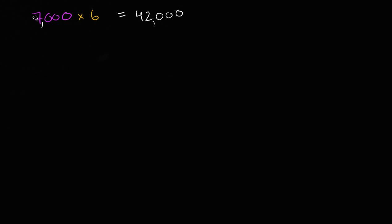So 7,000 is the same thing as 1,000 times 7, or 7 times 1,000, it's 7,000s. Or you could view it as 1,000 sevens, either way. So this is the same thing as 1,000 times 7, times 6. And so you could view it as you could do the 1,000 times 7 first, which would be 7,000, and then times 6.